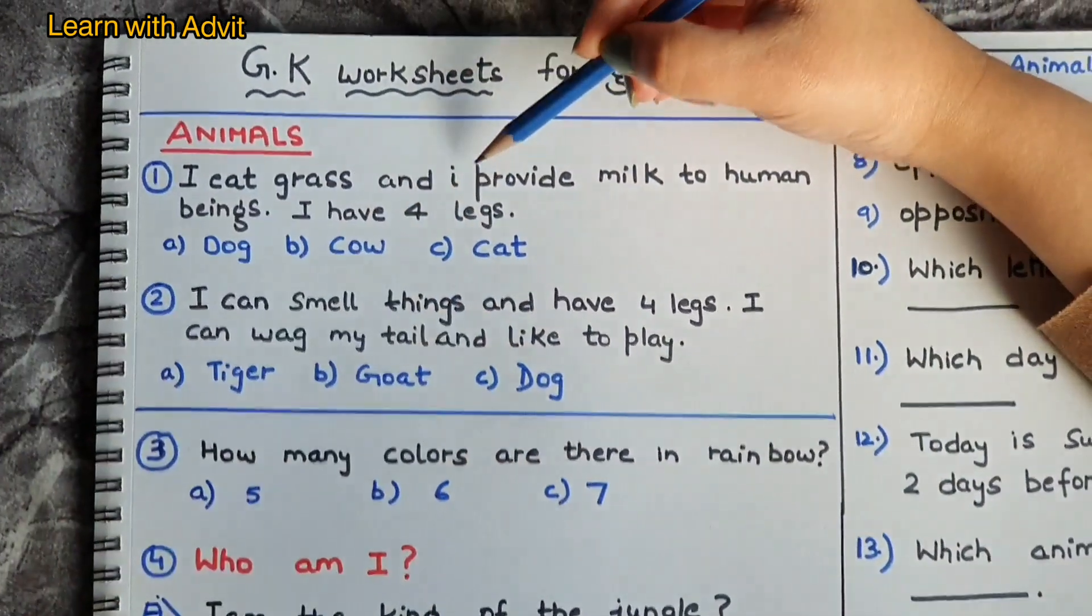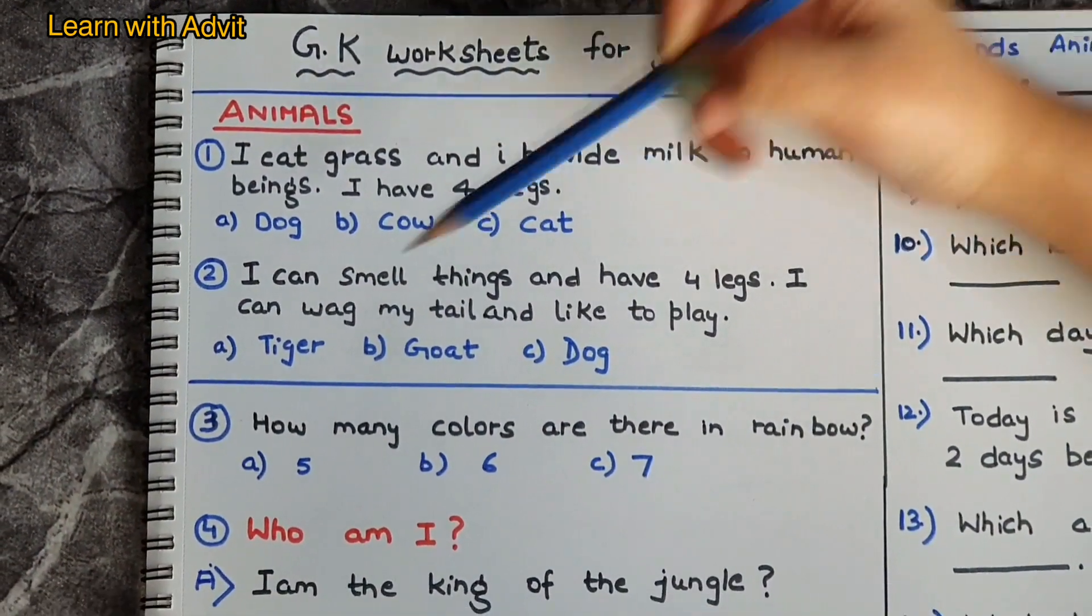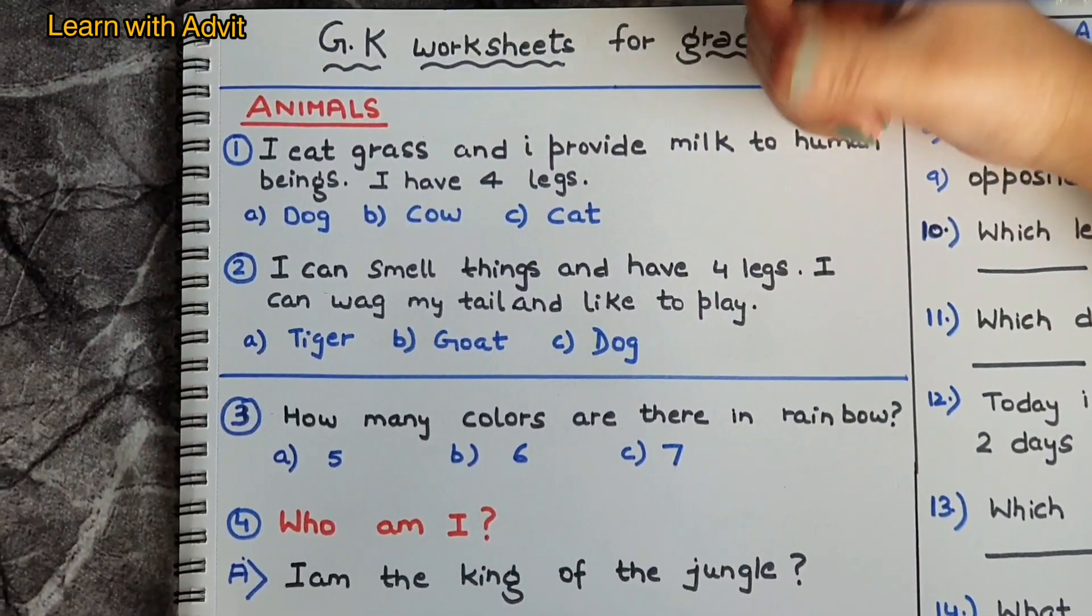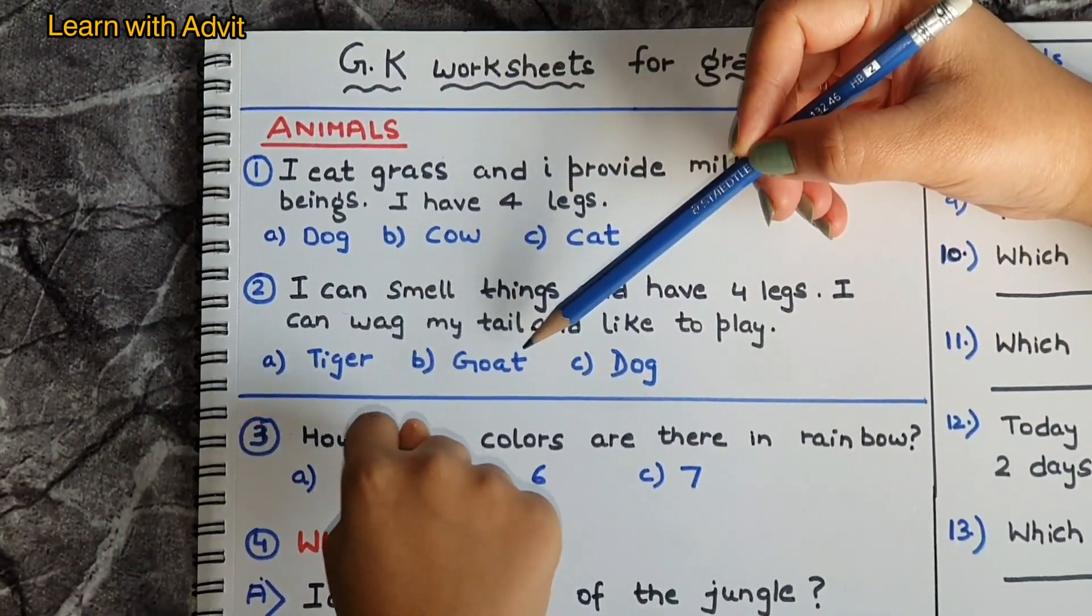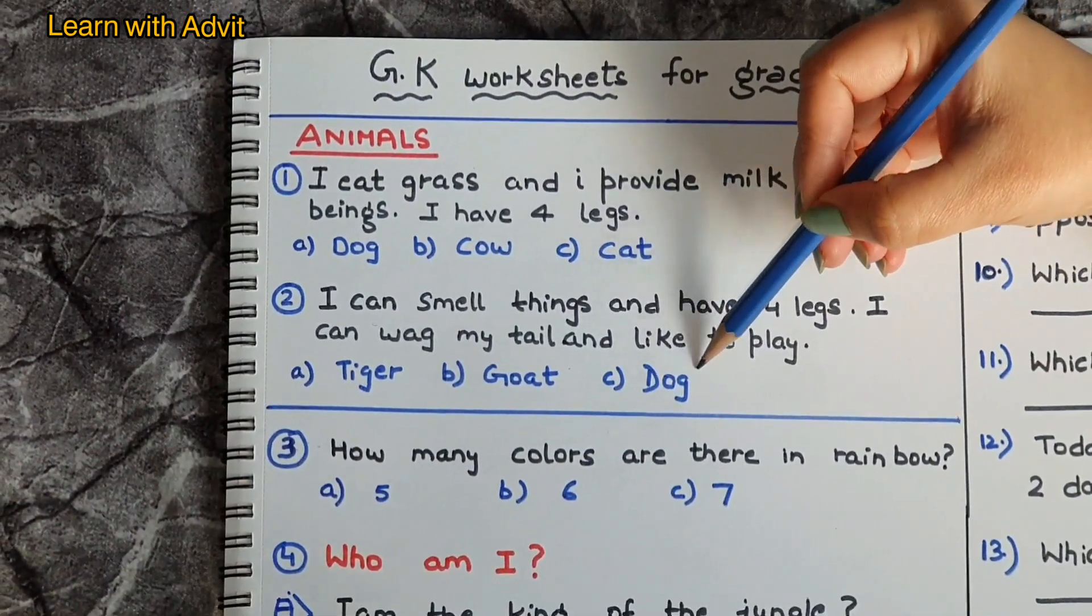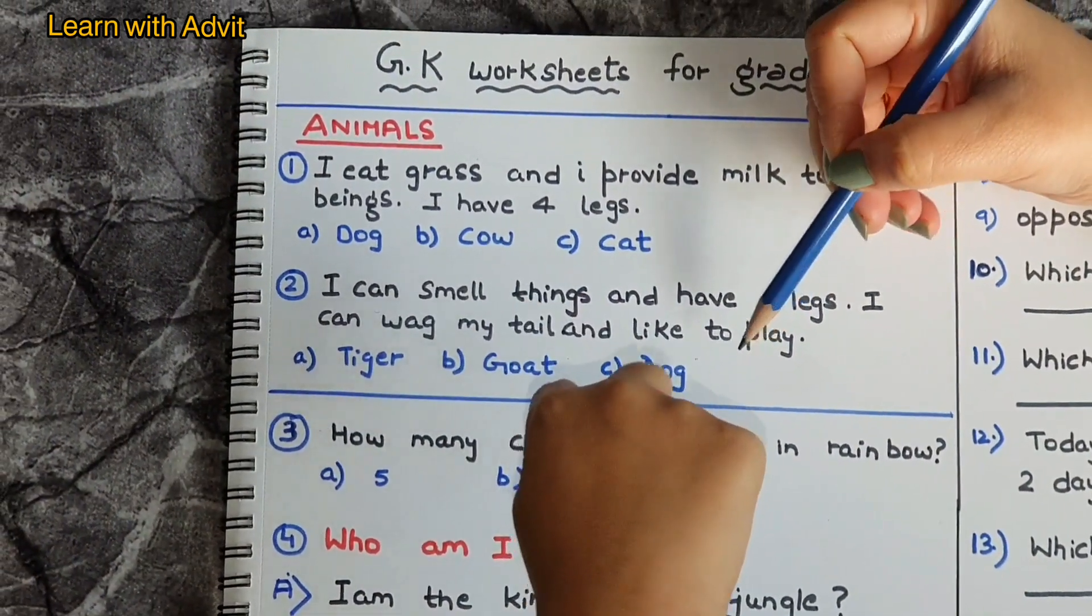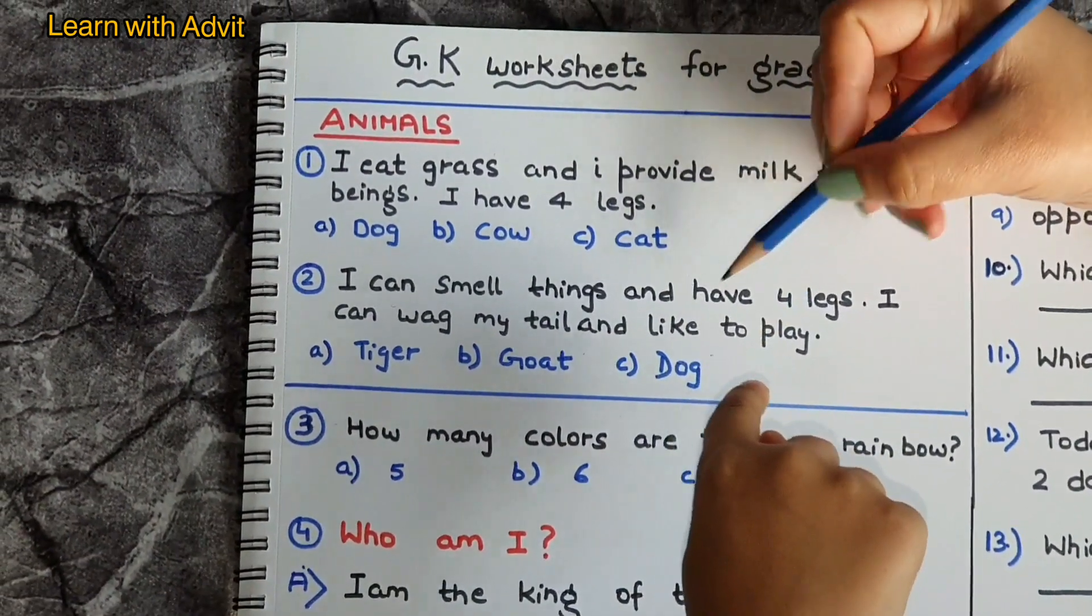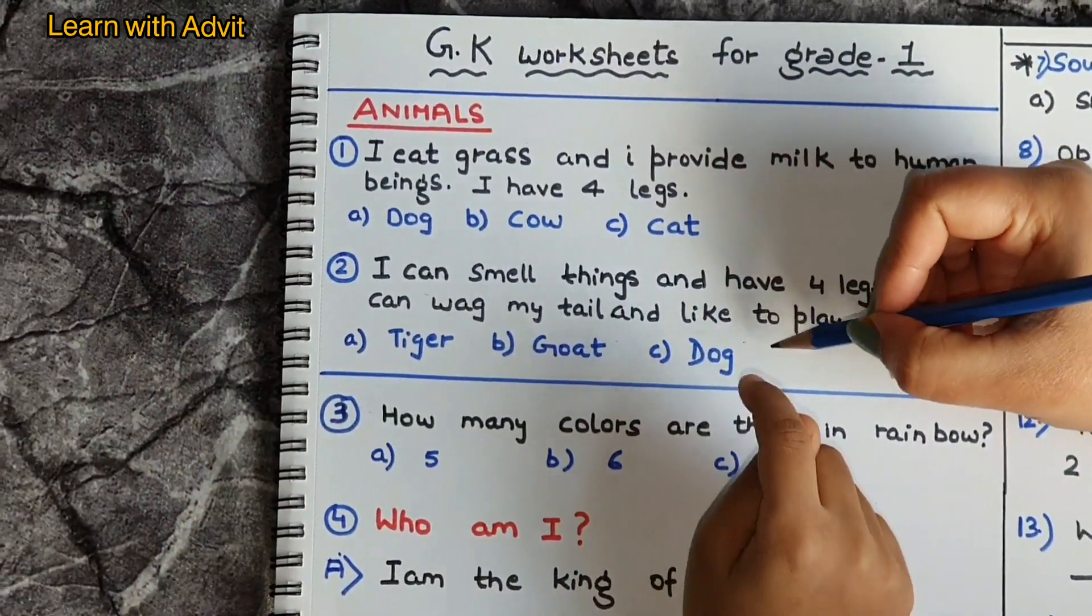I can smell things and have four legs. I can wag my tail and like to play. Which animal? Tiger? Tigers are wild animals. Goat is a farm animal and it eats grass and it doesn't smell, so that is not the correct answer. So dog likes to smell, has four legs, it likes to wag the tail and likes to play. Dog is correct. And here's the cow.